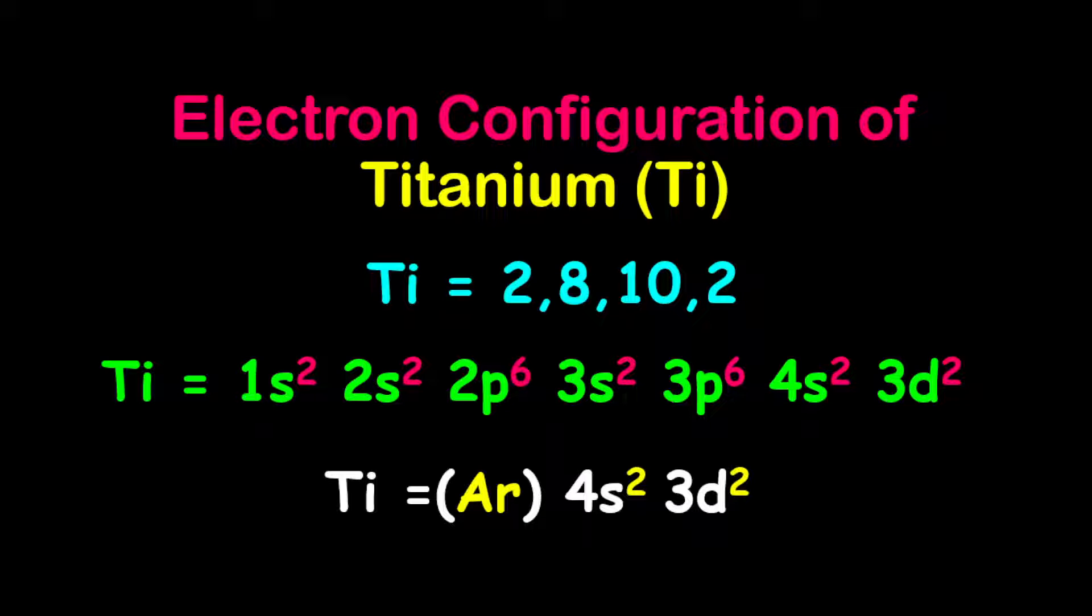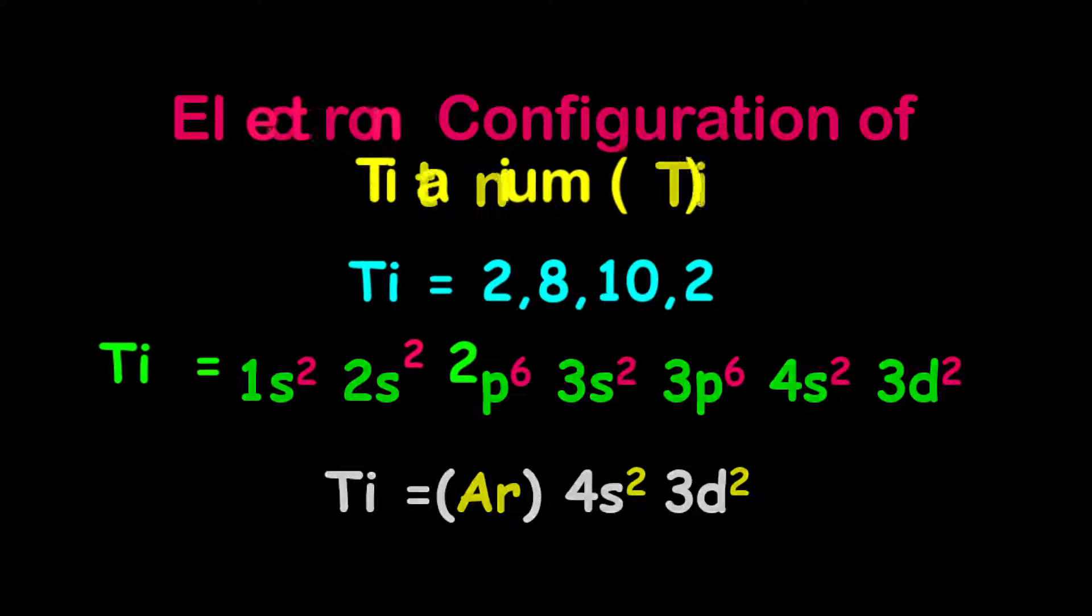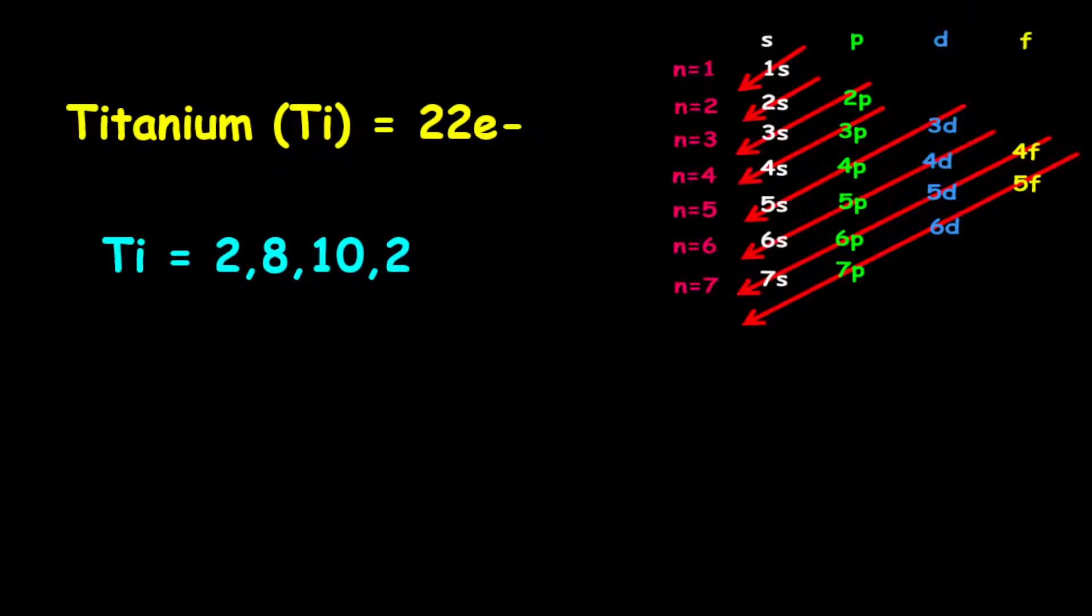The electron configuration of titanium. Titanium has 22 electrons. Therefore, the electron configuration is given as 2, 8, 10, 2. Notice that there are 10 electrons on the third shell. I will explain it shortly by using the orbital filling electron configuration.